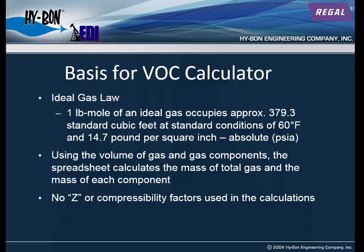The basis of the VOC calculator is the Ideal Gas Law, which you could simplify by saying one pound mole of an ideal gas occupies approximately 379.3 standard cubic feet at standard conditions of 60 degrees Fahrenheit and 14.7 PSIA. Using the volume of gas and gas components, the spreadsheet calculates the mass amount of total gas and the mass of each component. No Z or compressibility factors are used in the calculations.